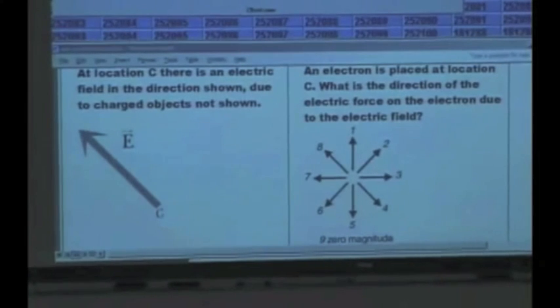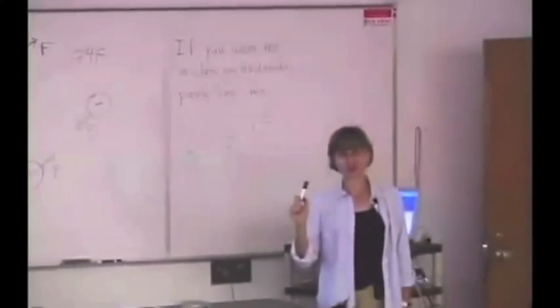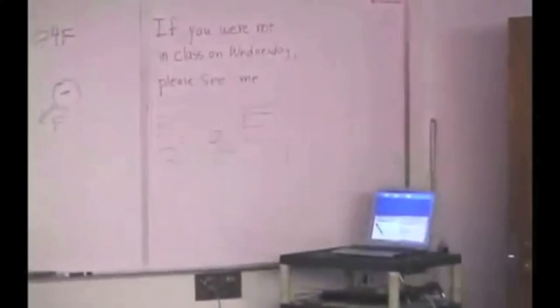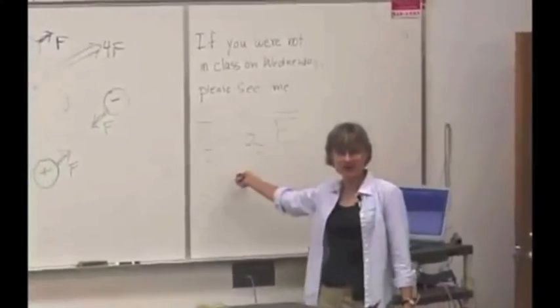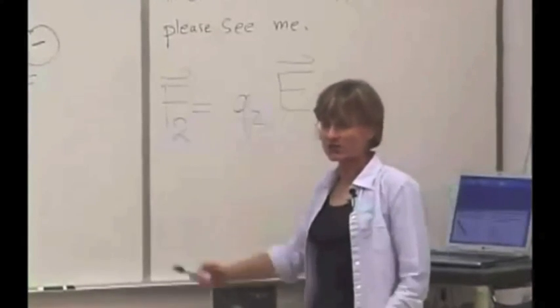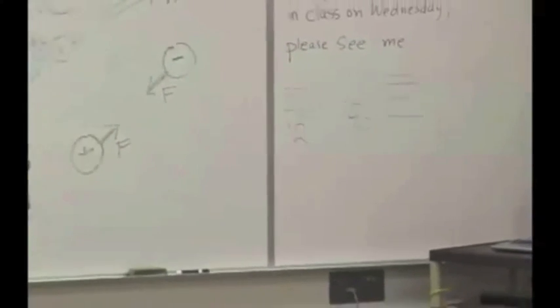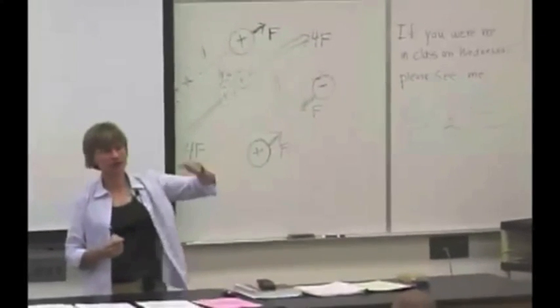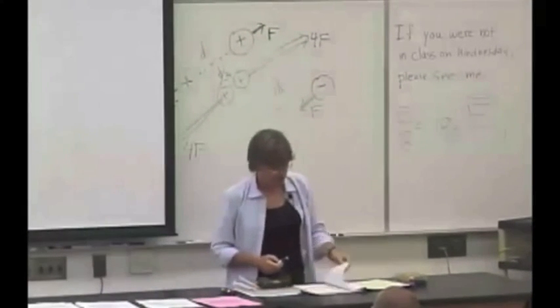Good for those of you who got it. One of the messages here is that this vector equation actually has a lot of information — it looks like a really innocent little equation, it really doesn't look like much. And yet it tells you a lot about the direction of a force given the field, or vice versa. If you know the direction of the force on a particle, and you know the particle's charge, you can figure out the direction of the field.